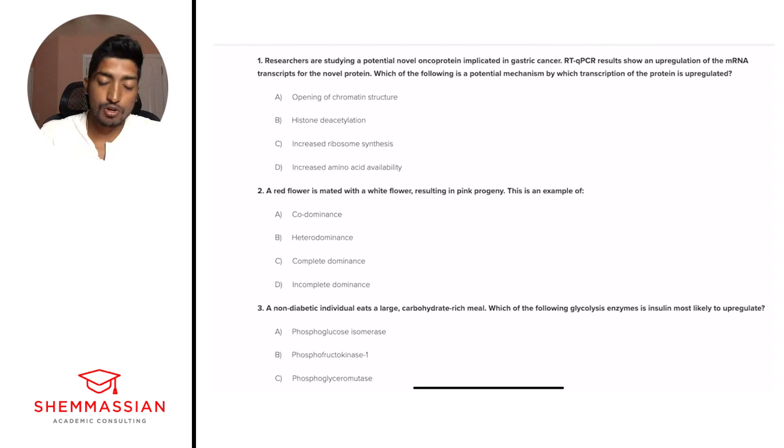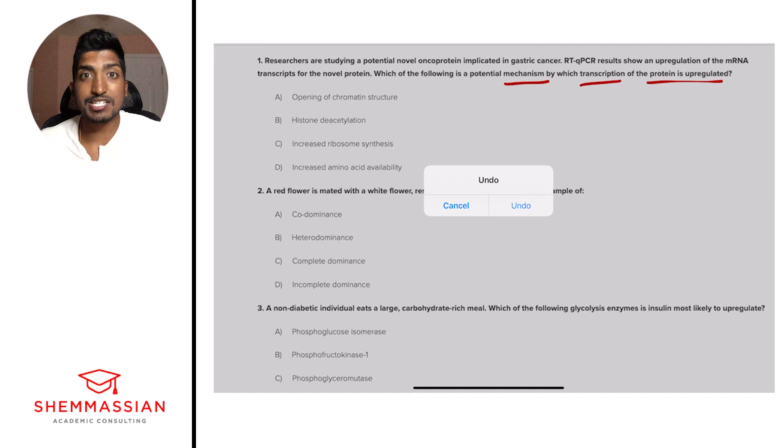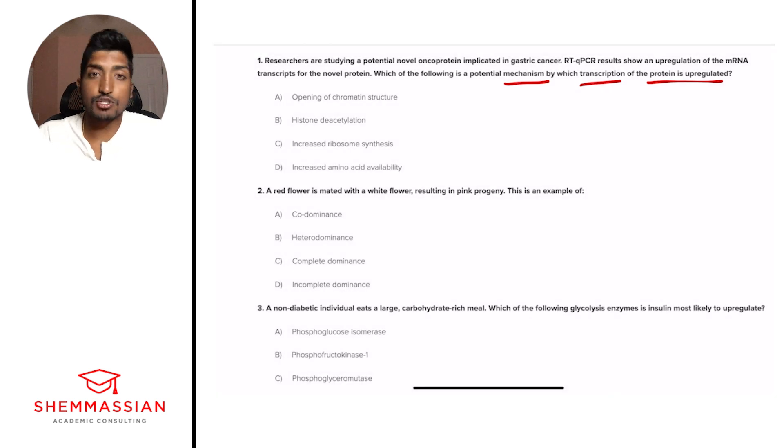All right. So the nice thing about these discrete questions is that the question is the only thing we really need to focus on. We can read through it just to understand the details, but for the most part, the question is really the only thing we care about. So here the question is mechanism for transcription of the protein being upregulated. Something simple, and we're just looking for an answer choice that will allow us to choose this.